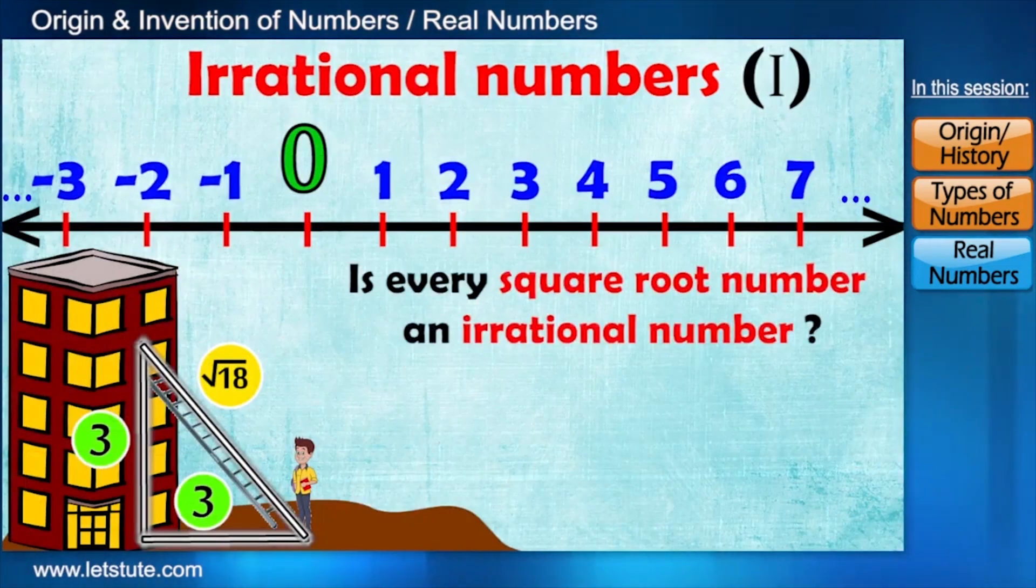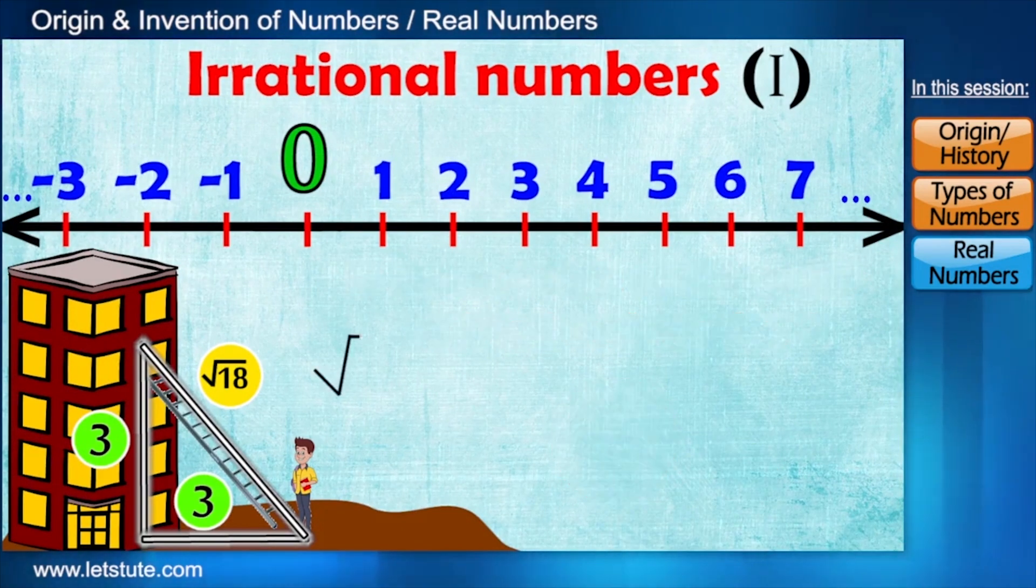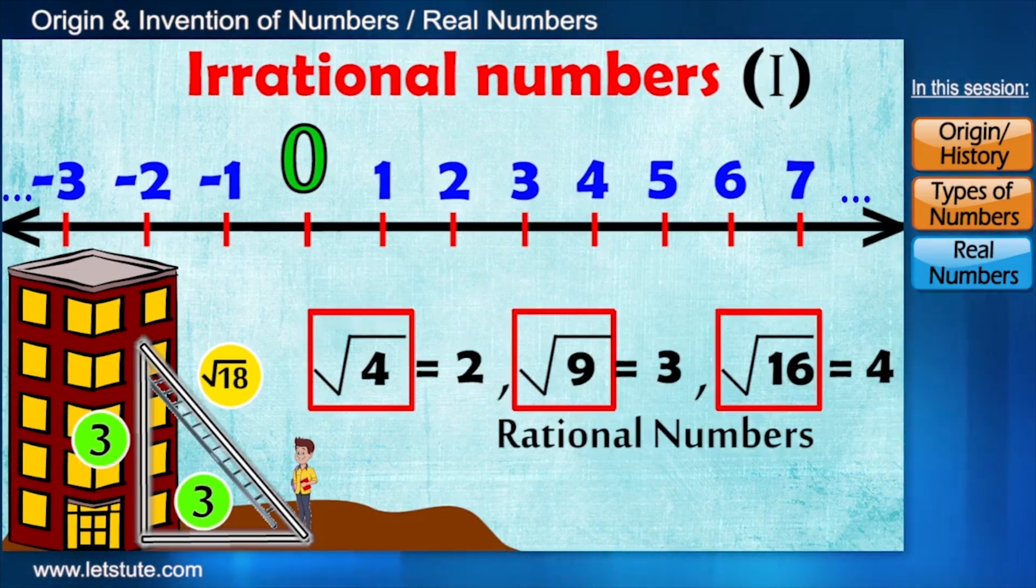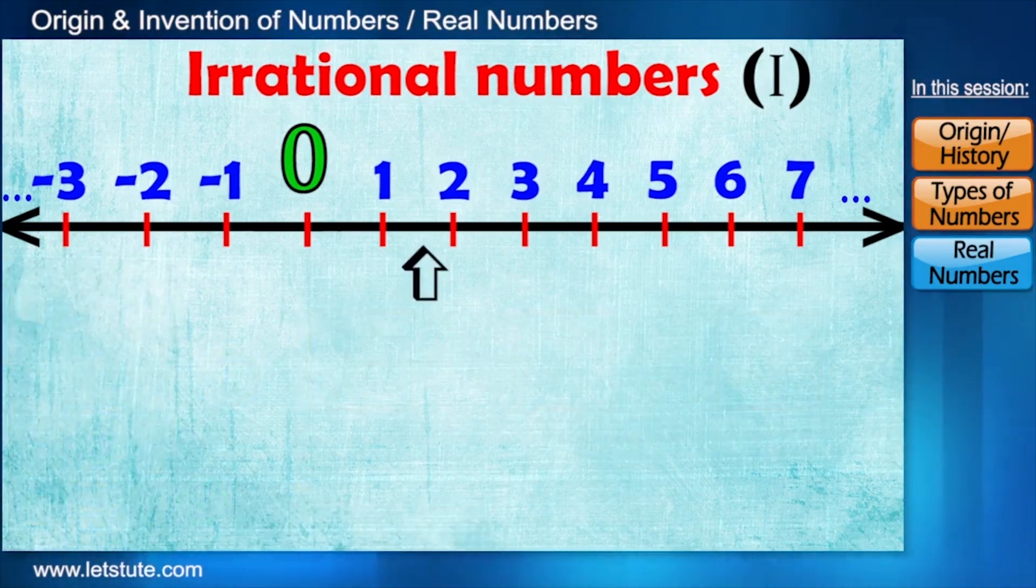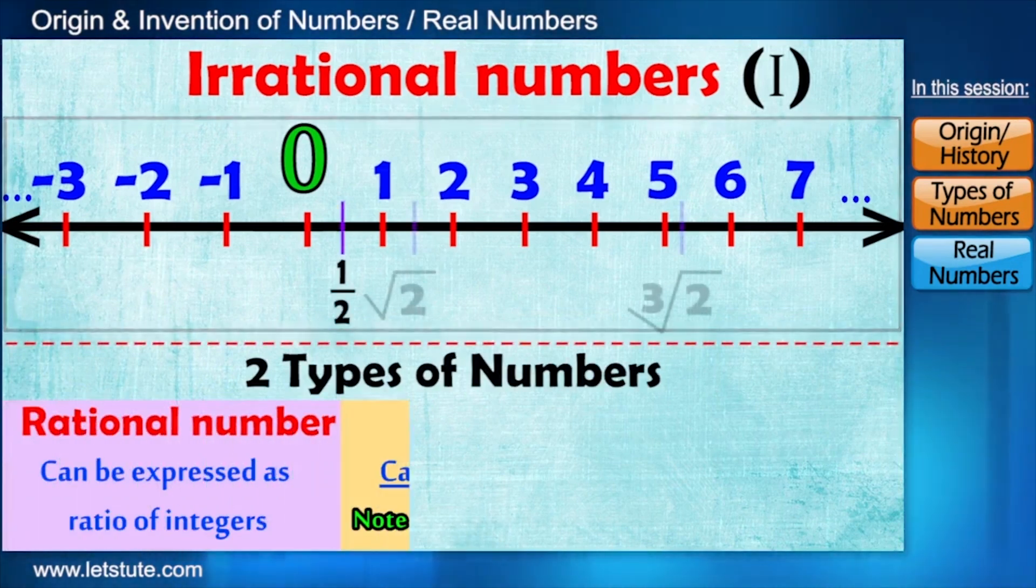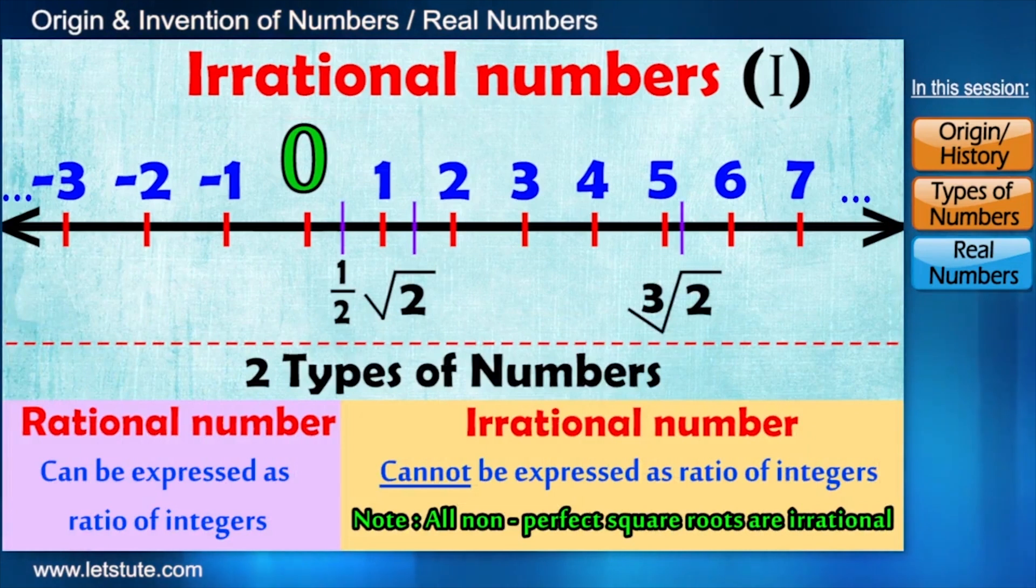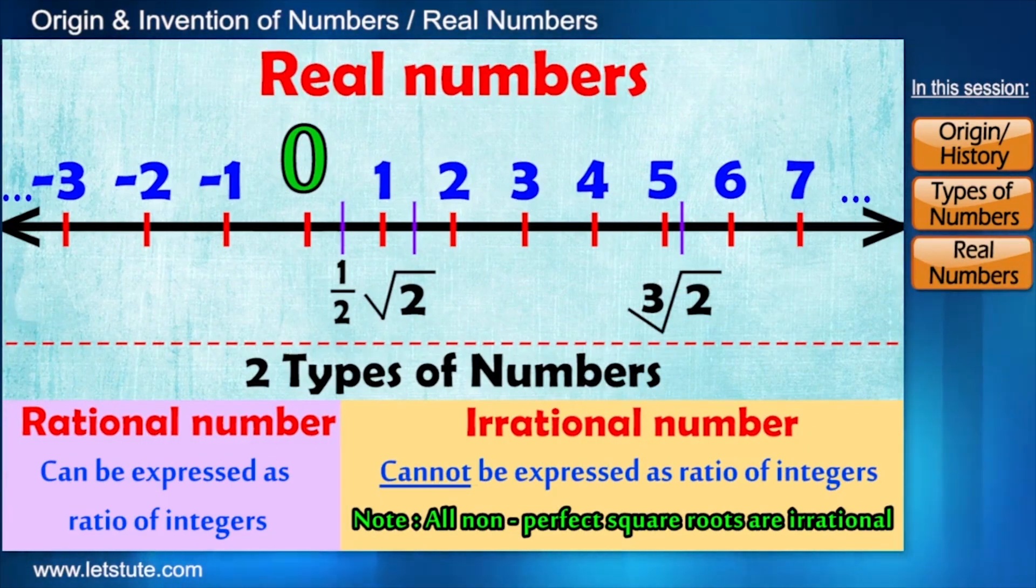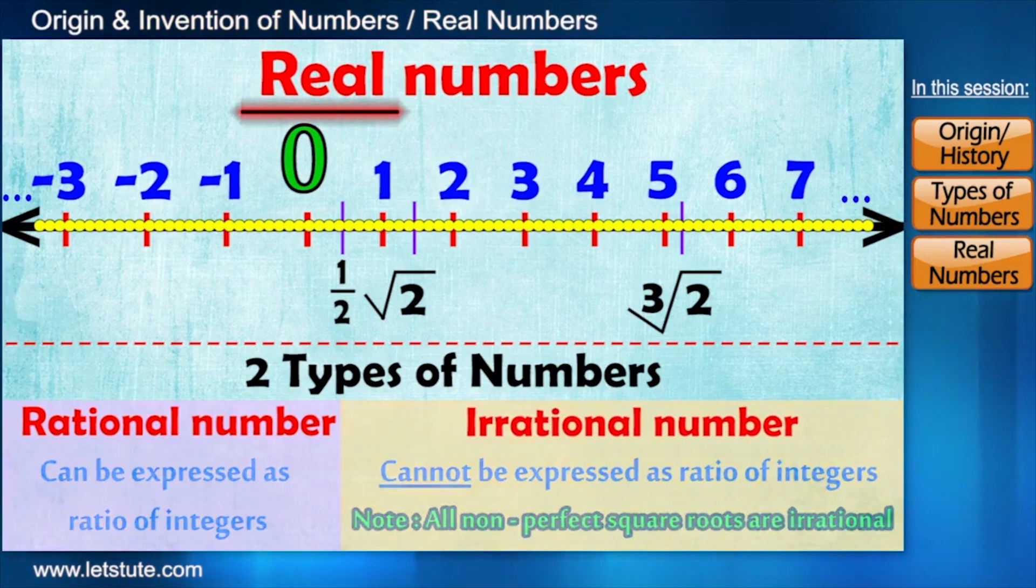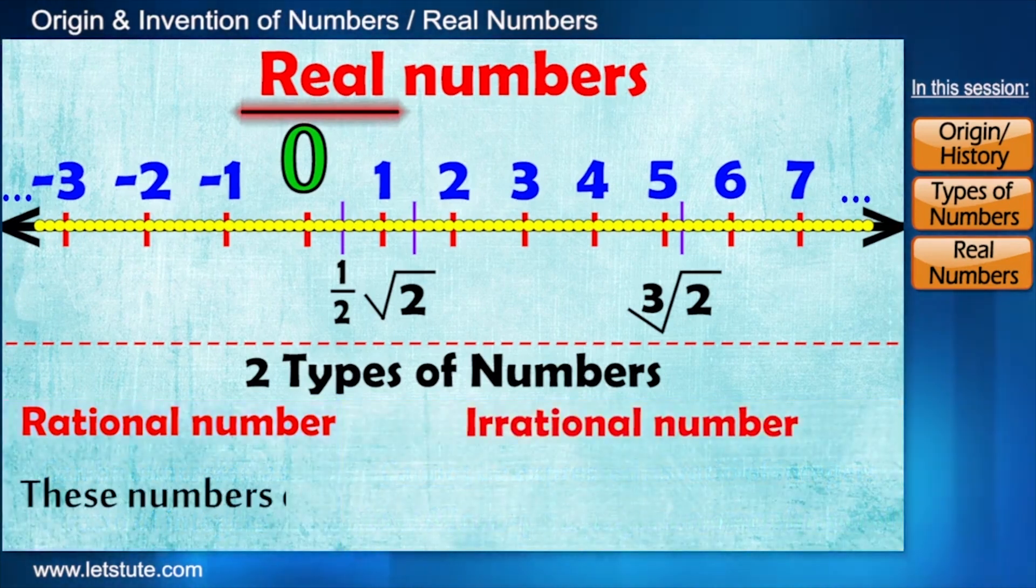So is every square root number an irrational number? No, root 4, root 9, root 16, they are not irrational numbers. In fact, they are rational. Therefore, we conclude that on this line we have only two types of numbers. Rational and irrational numbers. And these are together called real numbers. So every point on this line is a real number. Now they are called real because we can relate these numbers to our day-to-day lives.